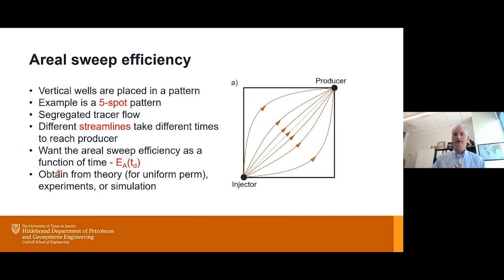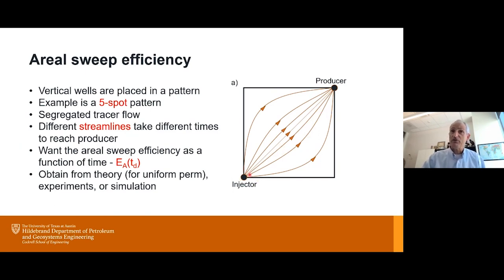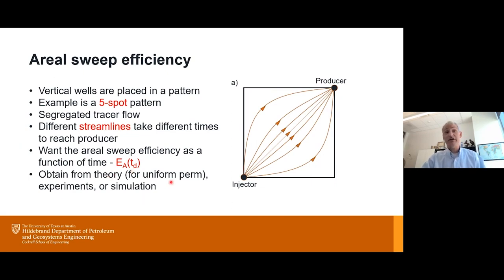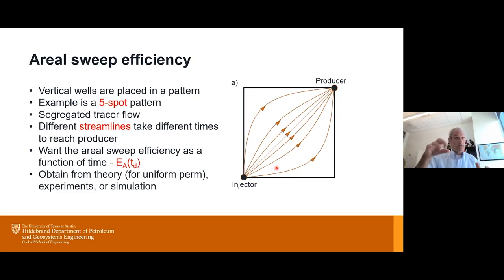For aerial sweep — wells are in a five-spot pattern and streamlines go faster in the middle, slower on the outside. People have done experiments and simulations to get this EA versus time — the recovery factor versus time for just aerial sweep in a 2D environment. You can fit the aerial sweep curve with a Koval number of 1.5 for uniform permeability. Both vertical sweep and aerial sweep each give their own recovery factor versus time, and now the question is: how do we combine these together with displacement efficiency?